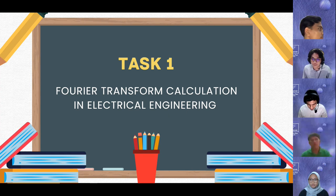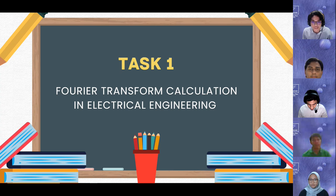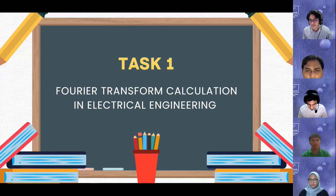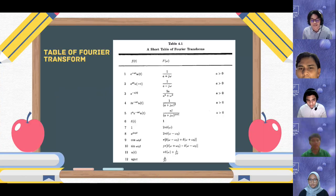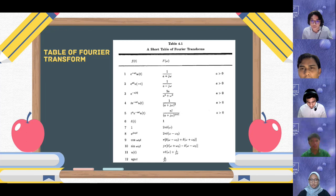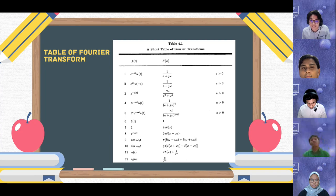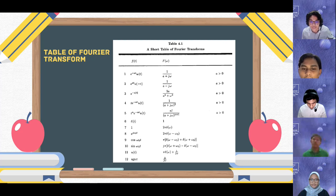Bismillahirrahim. My name is Noor Azmi Aleph Benjoarifin, and I have been assigned to do Task 1, which is Fourier transform calculation in electrical engineering. Before we start with the calculation, we need to know the function of the table of Fourier transform. On the left side is the time domain, and in the middle part is the frequency domain, which is omega. The equations I'm going to use are number 1 and number 12.